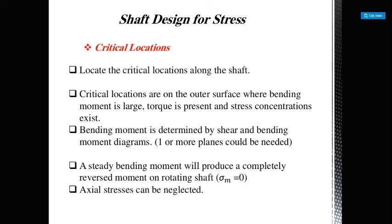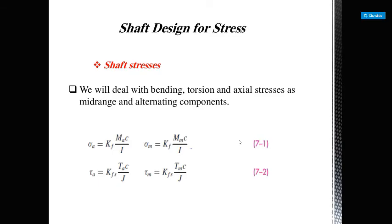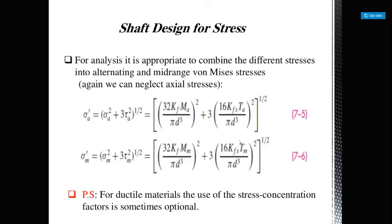Bending moment is determined by shear and bending moment diagrams. A steady bending moment will produce a completely reversed moment on a rotating shaft. Axial stresses can generally be neglected. Shaft stresses include bending, torsional, and axial stresses as mid-range and alternating components.